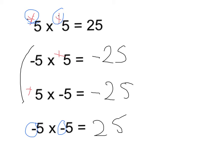Because on these two examples they're different signs, there's one positive and one negative, the answer is going to be -25. For the last example, because both signs are negative it makes a positive. If the signs are the same, the answer is positive.